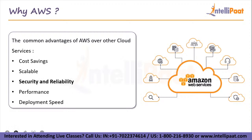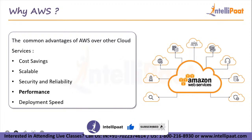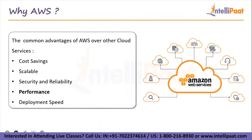Then comes security and reliability. AWS is one of the most secure cloud providers. It provides Identity and Access Management (IAM) service free of cost so that you can secure your AWS resources and restrict access to lawful users. AWS also provides data encryption at rest as well as in communication. On performance, the EC2 compute units in AWS give Xeon class performance on an hourly rate. On deployment speed, Amazon engineers deploy code every 11.7 seconds on average, reducing both the number and duration of outages at the same time.